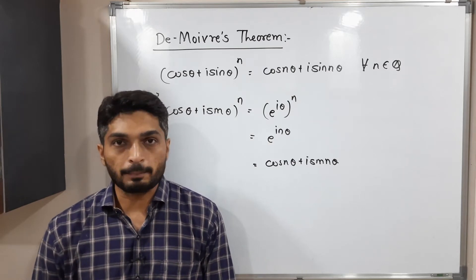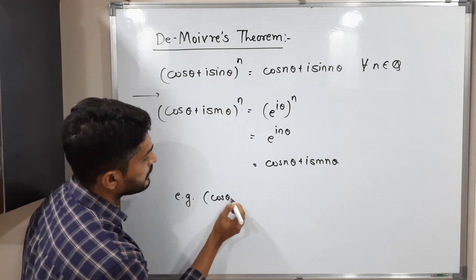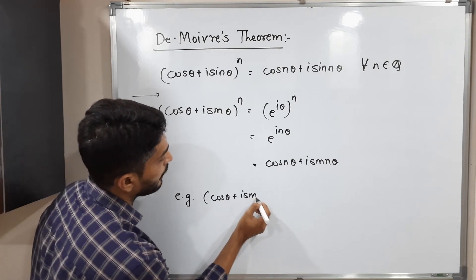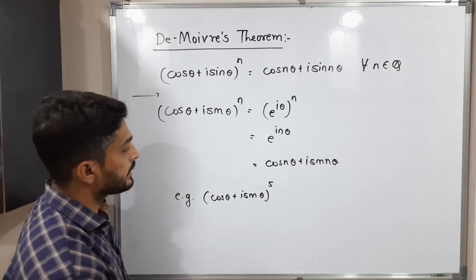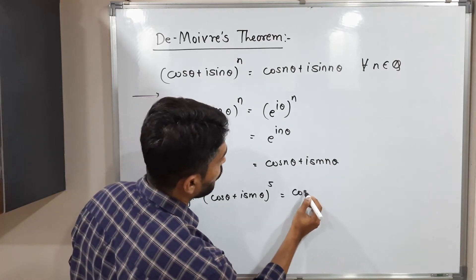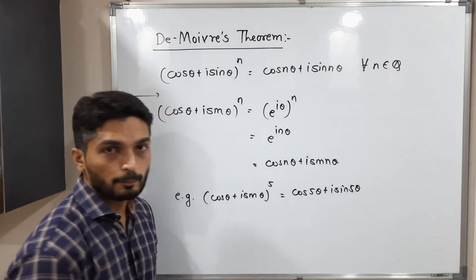So let us discuss its applications. Applications that means how can we use this theorem. Suppose we have (cos θ + i sin θ)^5. Then using this De Moivre theorem, we can write definitely cos 5θ + i sin 5θ, right.